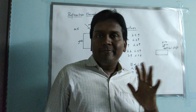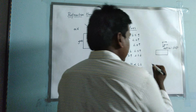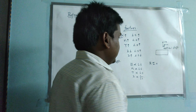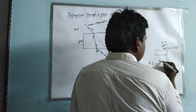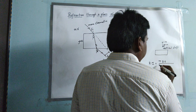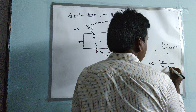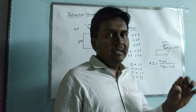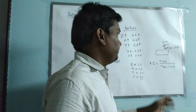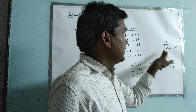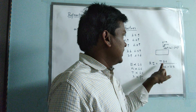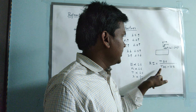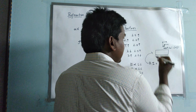We can find the refractive index of a glass slab using this formula: refractive index equals thickness of the glass slab divided by thickness of the glass slab minus vertical shift. First, find the thickness of the glass slab using a scale, then find the vertical shift using this process. Substituting these two values into the formula gives you the refractive index of the glass slab.